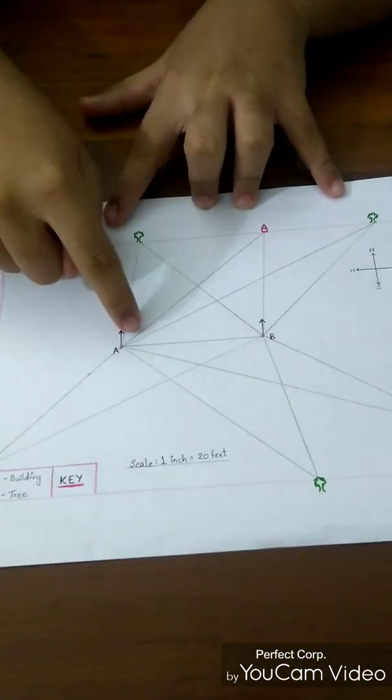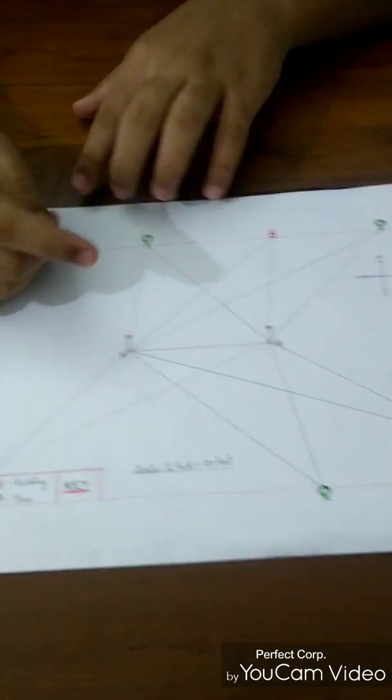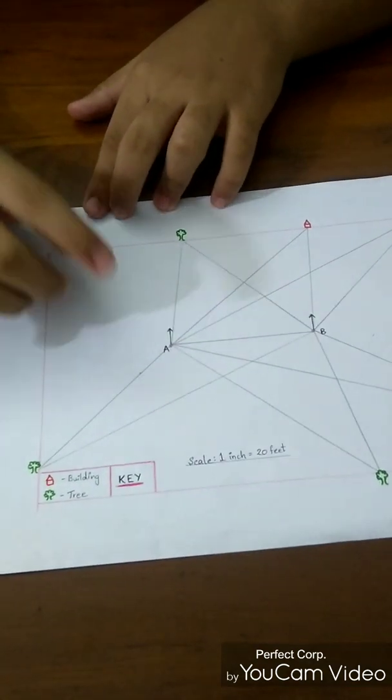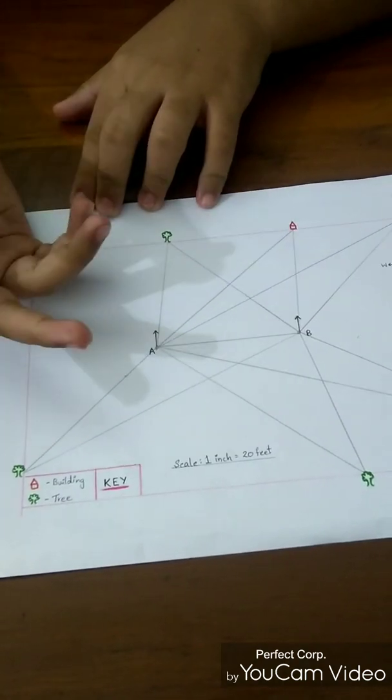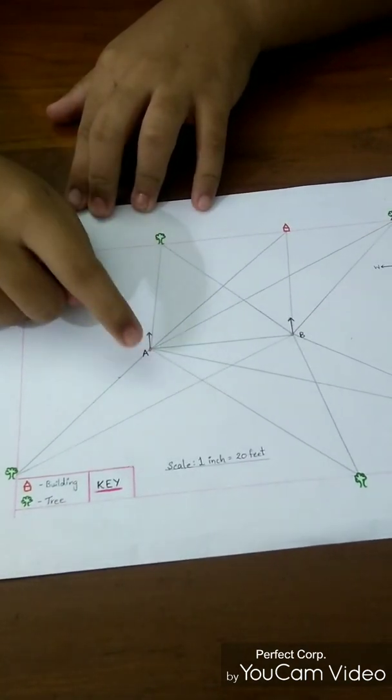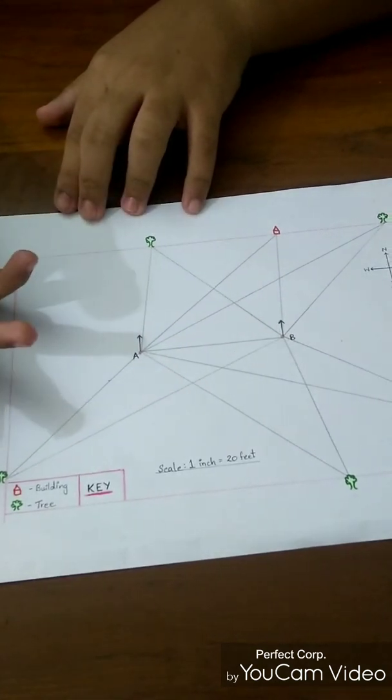Join both the points A and B with a baseline. Using an alidade instrument, I am going to find a distance from A to some structure, like a tree. Supposing the distance from A and the tree is around 70 feet.